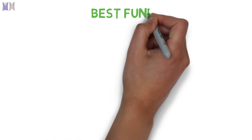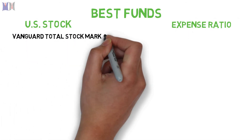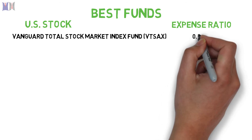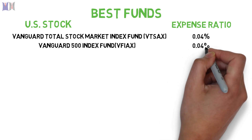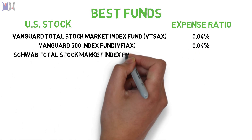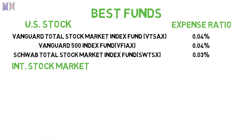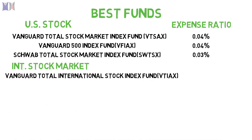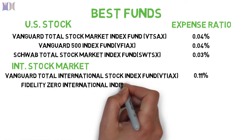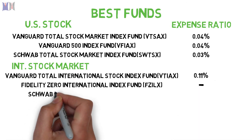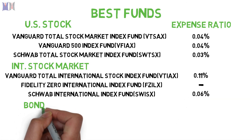Let me show you some of the best funds you can buy in each category. In the US stock category: the Vanguard Total Stock Market Index Fund with an expense ratio of 0.04%, the Vanguard 500 Index Fund with an expense ratio of 0.04%, and the Schwab Total Stock Market Index Fund with an expense ratio of 0.03%. For the international stock market: the Vanguard Total International Stock Index Fund with an expense ratio of 0.11%, the Fidelity Zero International Index Fund with no expense ratio, and the Schwab International Index Fund with an expense ratio of 0.06%.